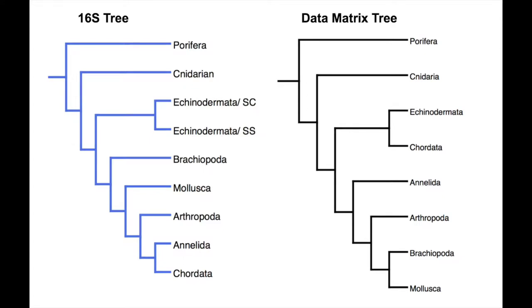The data matrix tree was built using 13 total characteristics, some of which included body cavity, cephalization, circulatory system, nervous system, etc., and one of our own choosing, which was habitat.